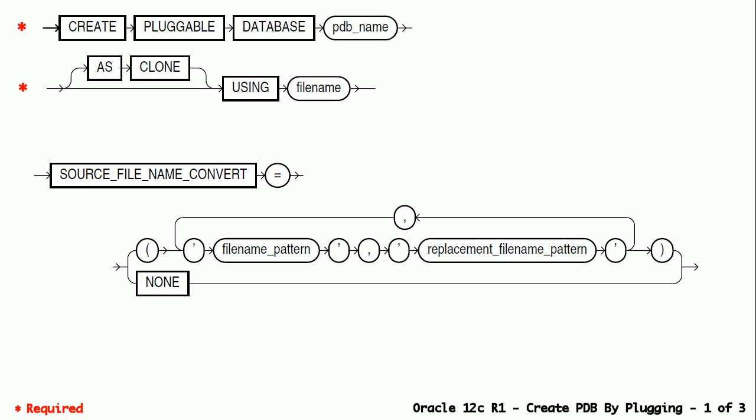Now let us look at the syntax for plug database: CREATE PLUGGABLE DATABASE pdb_name. The AS CLONE clause has to be used if the target container already contains a PDB that was created using the same set of data files. With this clause, Oracle generates a new DB identifier and GUID for the new PDB.